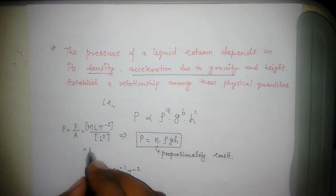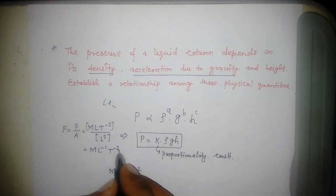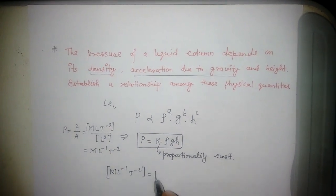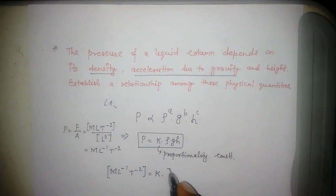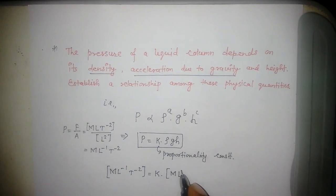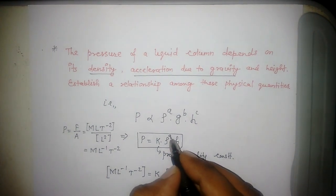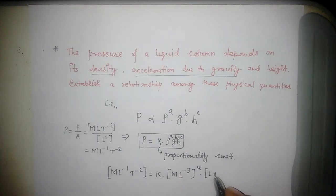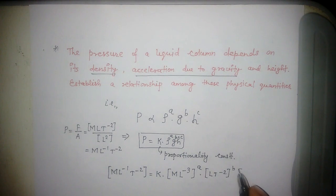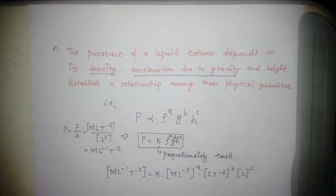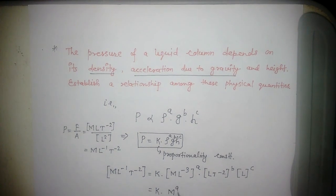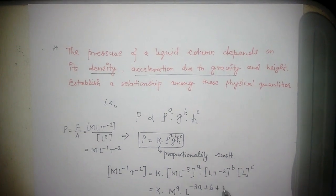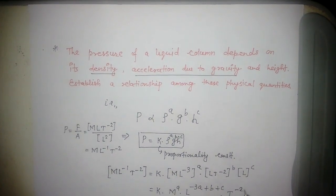So M L^-1 T^-2 = K × density × g × h. Density is mass per unit volume, so it is M L^-3 to the power a, L T^-2 to the power b, and L to the power c. This equals K M^a L^(-3a+b+c) T^-2b.